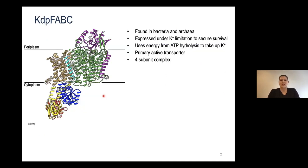KDPF-ABC is exclusively found in prokaryotic organisms where it is expressed under potassium limiting conditions. When the external potassium concentration falls below 100 micromolar, KDPF-ABC is expressed to secure the cell's survival. It takes up potassium against a very steep gradient into the prokaryotic cell. This process is dependent on ATP hydrolysis, and hence KDPF-ABC is a primary active transporter.